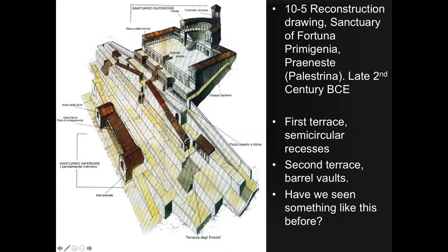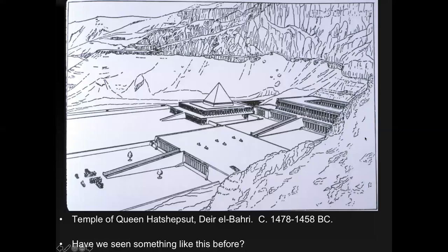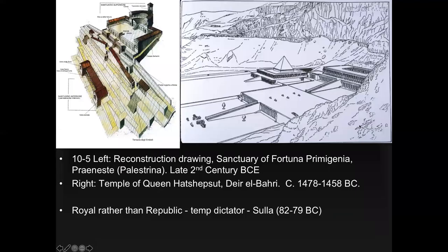The second terrace has barrel vaults, and we're going to see this structure again. Have we seen something like this before? You can look at the funerary temple of Queen Hatshepsut — the same sort of thing with multi-terraces, repetitive elements brought down to human scale, and also molded to the site. This structure was made when Rome was briefly ruled by a temporary dictator, Sulla, who ruled from 82 to 79 BCE.